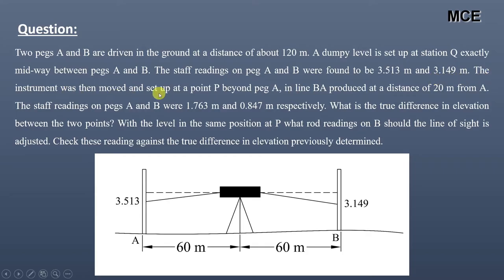The instrument was then moved and set up at point P beyond peg A in line BA produced at a distance of 20 meters from A. The staff readings on pegs A and B were 1.763 meters and 0.847 meters respectively.